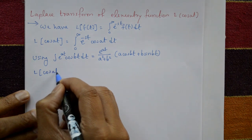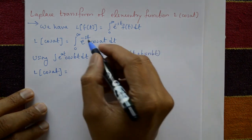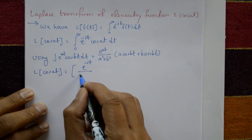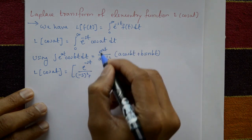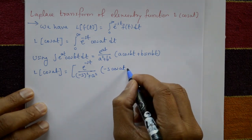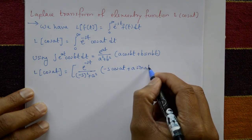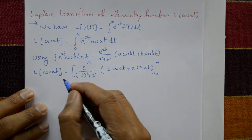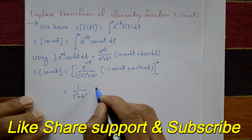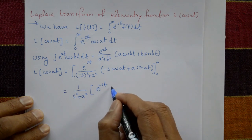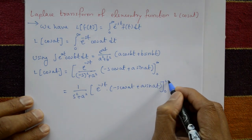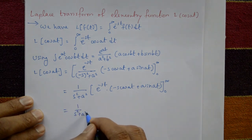Using the standard formula, Laplace of cos(at) equals e to the power minus st, divided by ((-s)² + a²), into ((-s)·cos(at) + a·sin(at)), with limits 0 to infinity. Taking the constant 1/(s² + a²) outside, we get 1/(s² + a²) times e^(-st) times (-s·cos(at) + a·sin(at)), evaluated from 0 to infinity.